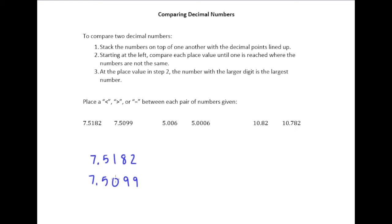And in the hundredths place, that's the first spot that they're different. And in that place value, 7.5182 has the bigger digit, so therefore we can say that it is the bigger number.